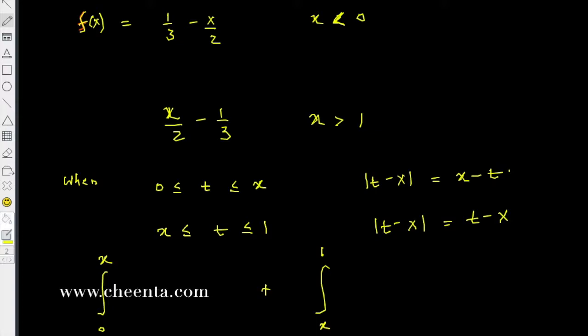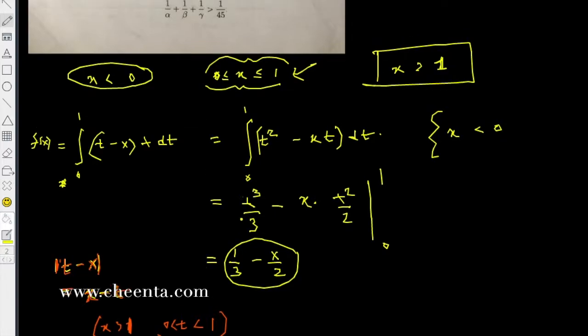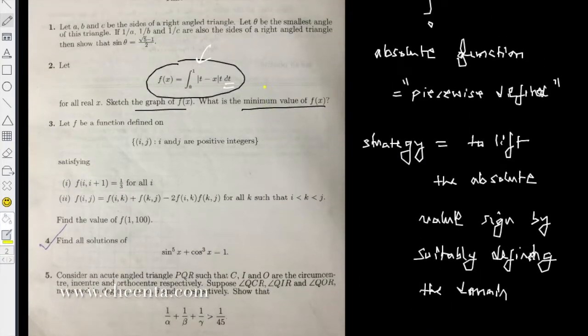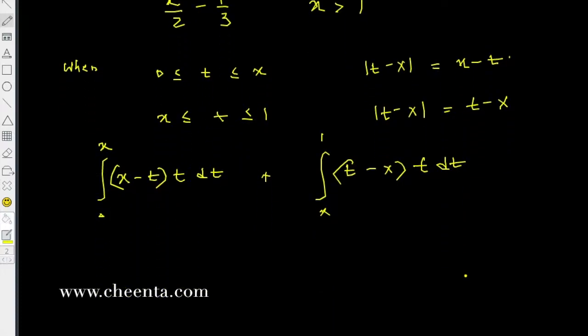So let's divide the integral from 0 to x plus x to 1, so t minus x. Let's quickly review the integral here. This would be x minus t times t times dt, and this will be t minus x times t times dt.